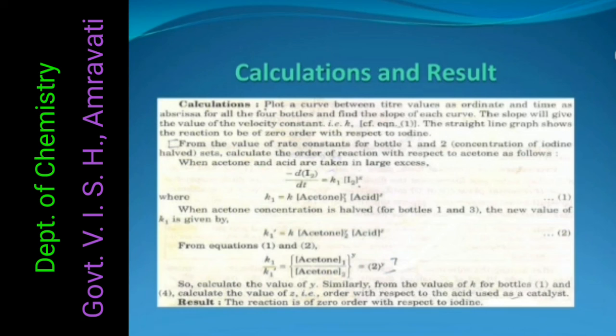From the value of rate constant for bottle 1 and 2, concentration of iodine held constant, calculate the order of reaction with respect to acetone as follows. When acetone and acid are taken in large excess, when acetone concentration is held for bottle 1 and 3, the new value of k is given.